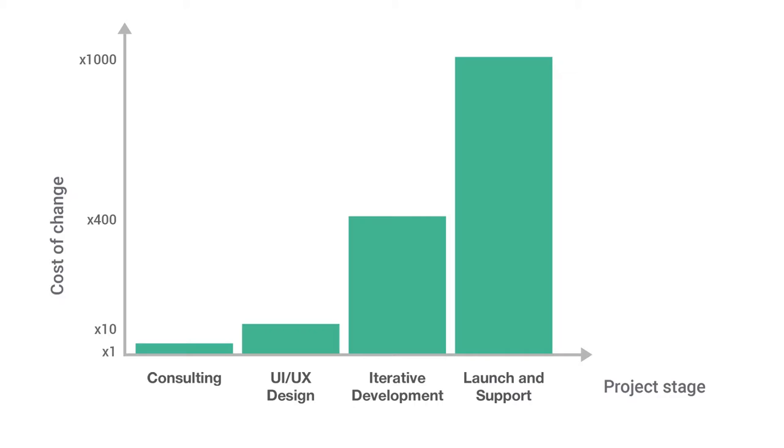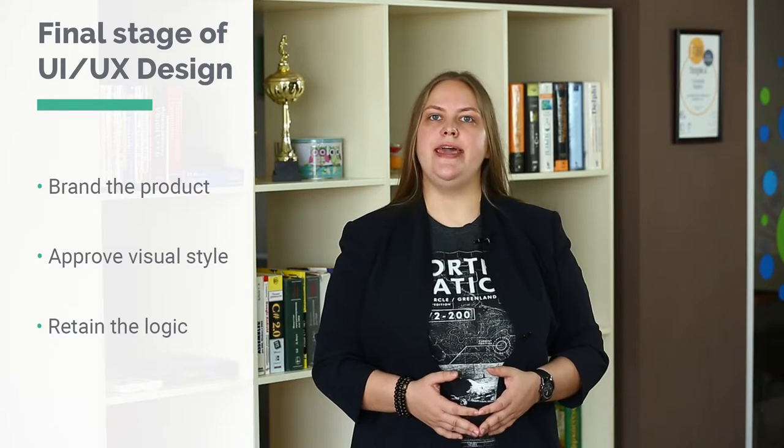The final step of UI/UX design is visualization and branding of all the interface elements of the product. The cost of changes at this stage is extremely high. The development team prepares the estimation for development based on the approved UI/UX design and project documentation. What should be done here? Brand the product, approve the visual style, retain the logic, and involve a developer. It's very important to involve a developer at this stage to understand how the product will work and look, in order to prepare the development estimation and suggest the least time-consuming ways of implementation. What the client gets: all source files, full understanding of the logic and appearance of the product, and a full estimation for development.